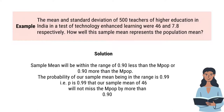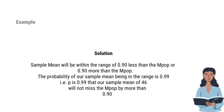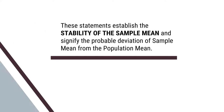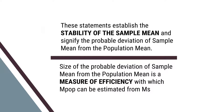The sample mean will be within the range of 0.90 more or 0.90 less than the population mean. The probability of our sample mean being in this range is 0.99. That is, P equals 0.99 — our sample mean of 46 will not miss the population mean by more than 0.90. We are 99% confident that our sample mean of 46 will not miss the population mean by more than 0.90.